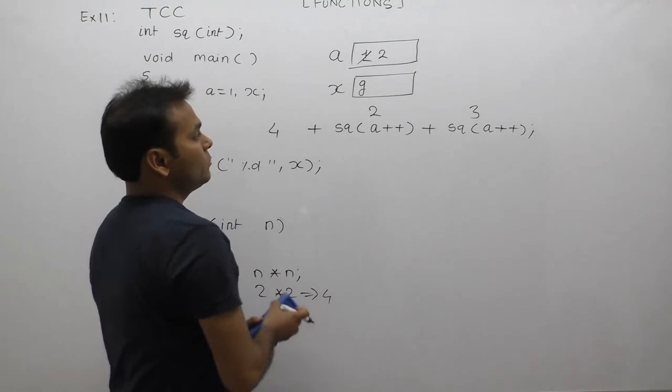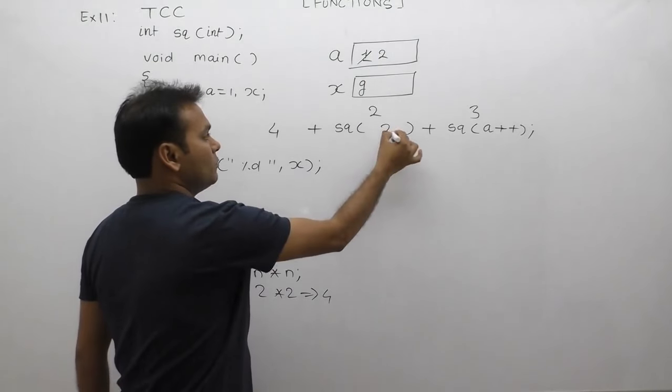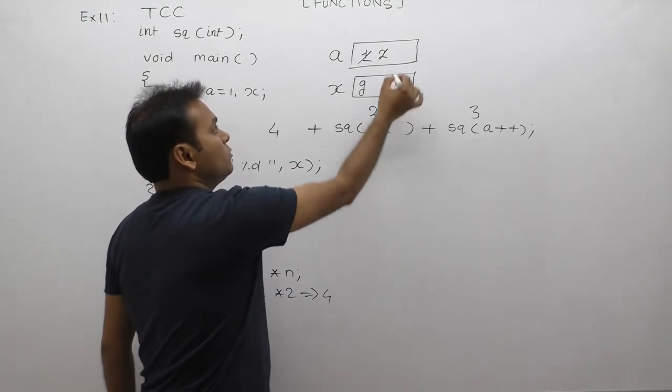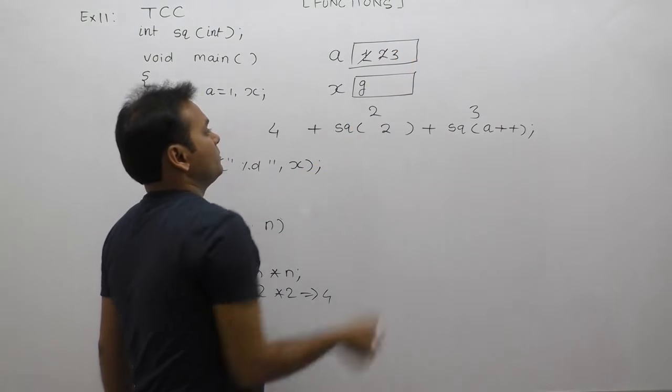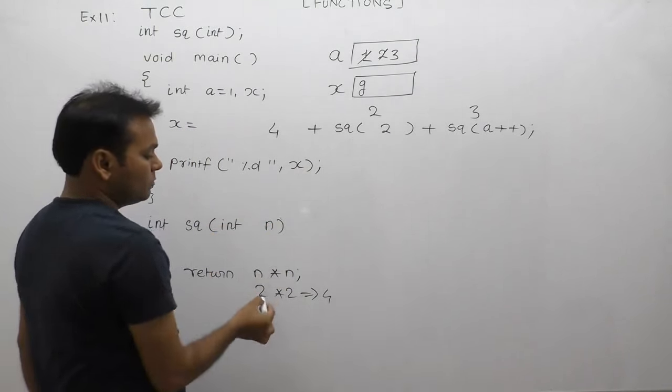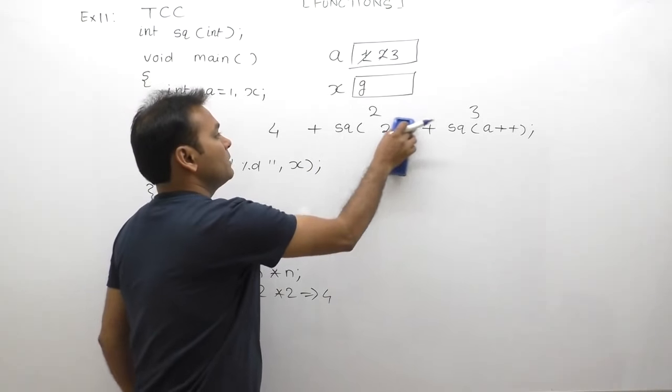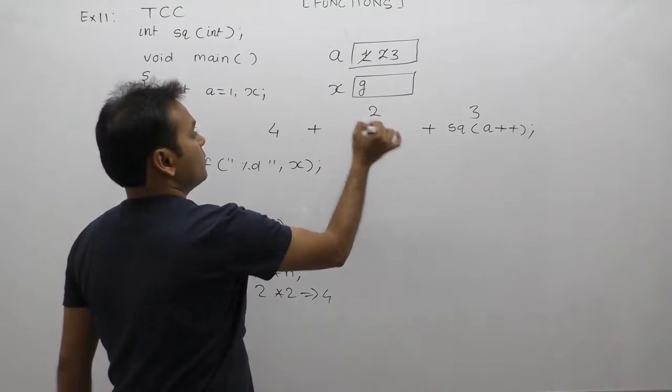According to post-increment, now a becomes 3. Again, sq function is called with value 2, multiplied by 2 gives 4. That's why the return value is 4. We replace this position with value 4.